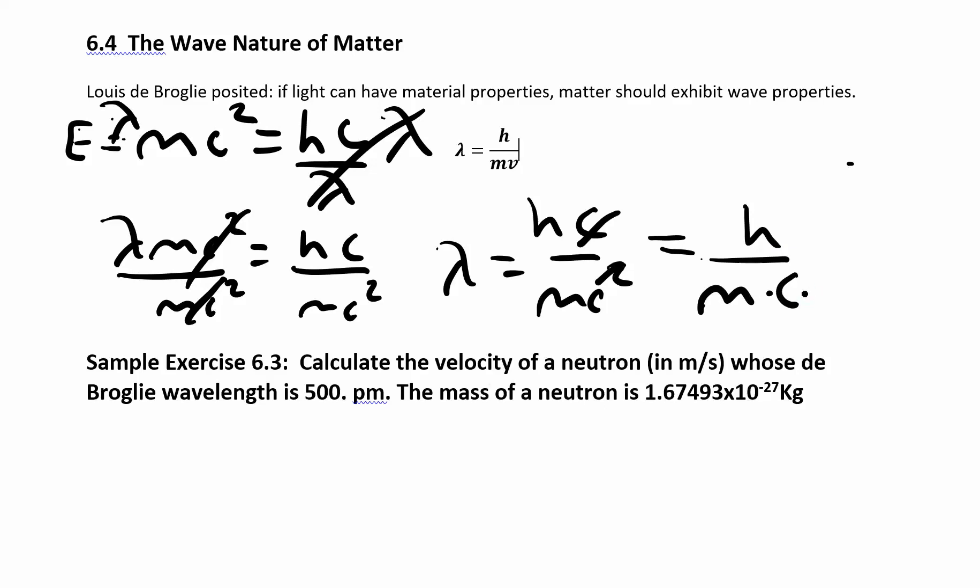And he said this is for the speed of light, mc squared and hc over lambda, and c is the speed of light. But this should work for any velocity. So he changed this to h over m times v. Not nu, but this is velocity, not frequency. So that's how we get this equation.